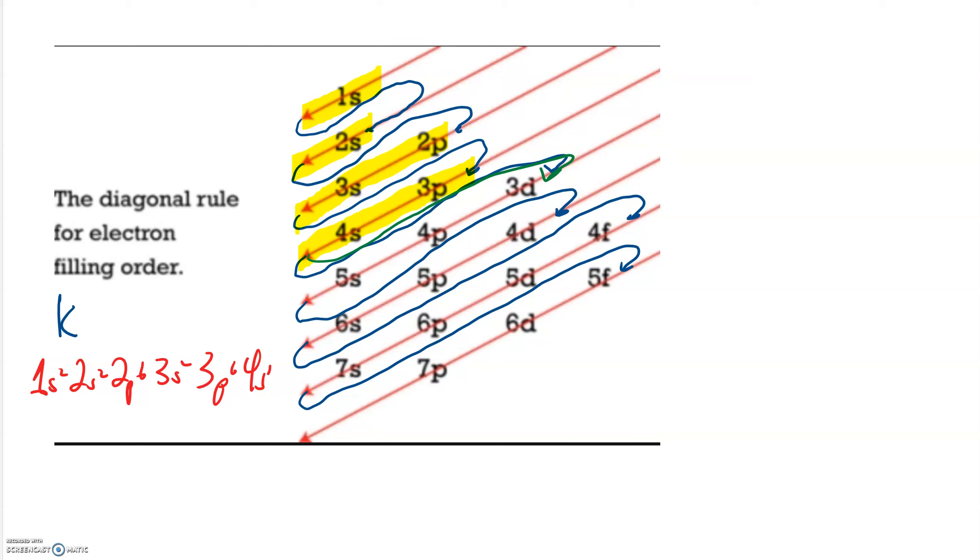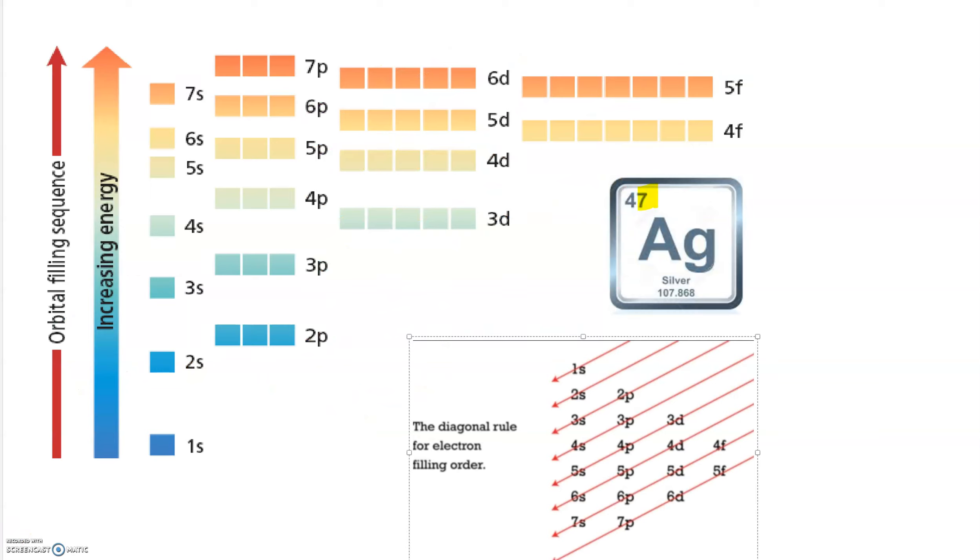This might also explain why the periodic table looks the way it does in terms of how wide its sections are. Let's do one. We've got silver. It has 47 electrons. So let's fill them in the proper order, in the proper sequence. And we're going to use this guy, the diagonal rule for electron filling order, as our guide. And remember, it makes a bit more sense if you point these arrows at each other. So let's start off. We've got 47 electrons.